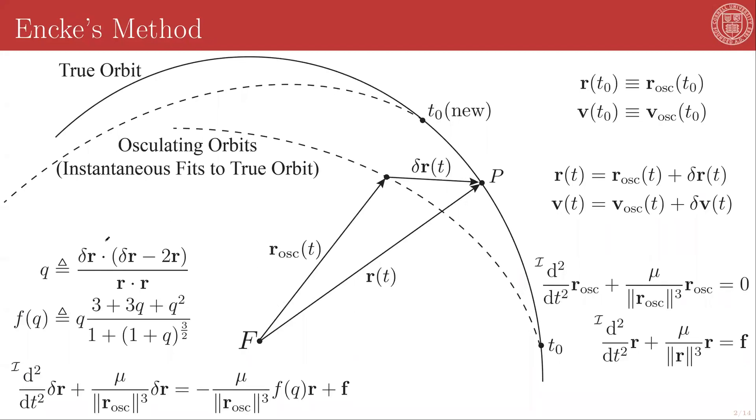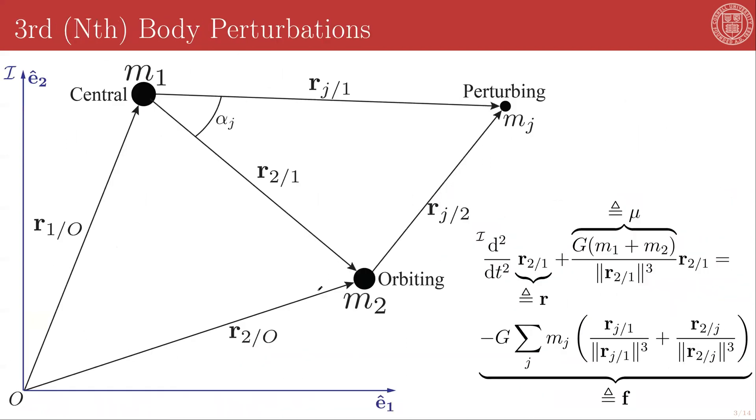Next, we're going to use a lot of the formalism developed here for Encke's method to take a closer look at a very specific set of perturbations, those given by nth body gravitational interactions. This is an incredibly important set of perturbations that come up again and again, especially when looking at large long-term stable n-body systems such as the solar system.